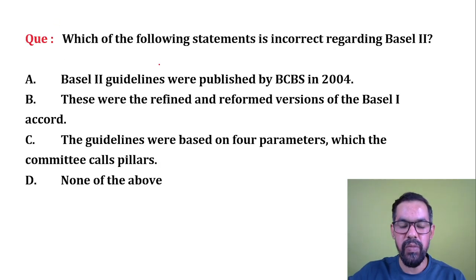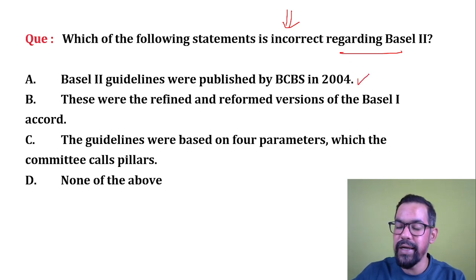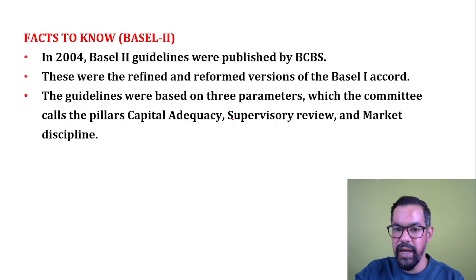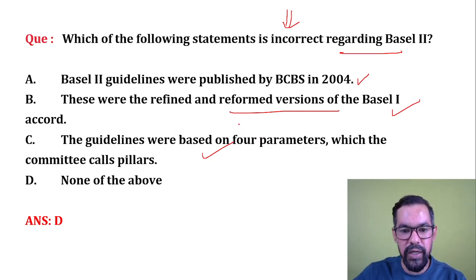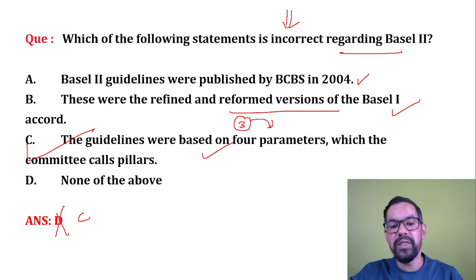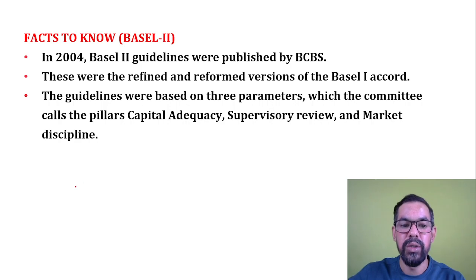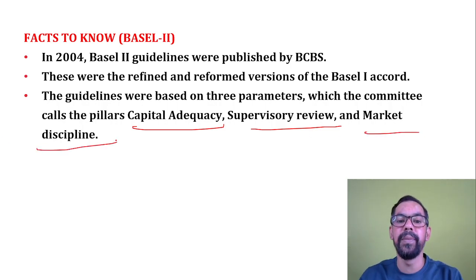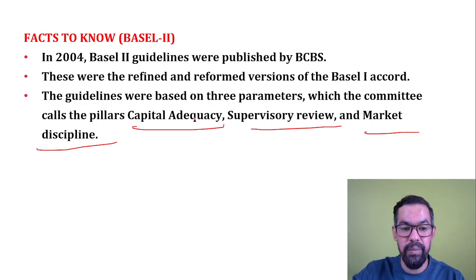Next question: which of the following statements is incorrect regarding Basel 2? Basel 2 guidelines were published in 2004 — correct. They are a refined and reformed version of Basel 1 accord — correct. The guidelines were based on three parameters which the committee called pillars — but the question states four parameters, which is incorrect; it is actually three pillars. So option C is the correct answer. The three pillars of Basel 2 are capital adequacy ratio, supervisory review, and market discipline. Please remember these three pillars — they were first introduced in Basel 2.